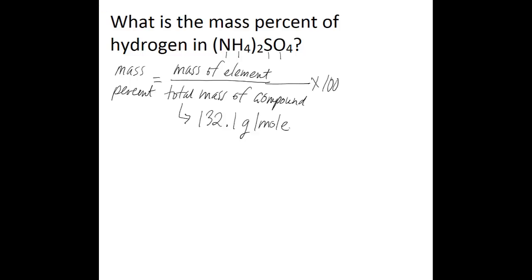The next thing you want to do is find the mass of the element in that compound, also using the atomic mass number from the periodic table. So we're interested in hydrogen in this case. So we have eight hydrogens in this compound.